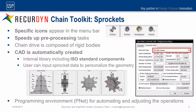The Chain Toolkit is dedicated to the creation of chain transmissions. Therefore, it gives the user access to specific entities normally used in the creation of these systems. Specific icons appear in the menu bar to create, for example, rollers and different kinds of sprockets, such as multiplex and silent sprockets, as you can see in the image. The toolkit speeds up all preprocessing tasks because it automatically creates the 3D CAD geometry. The user can simply select entities from an internal library, which includes standard elements, or input specific data to personalize the geometry. All elements created in the toolkit are modeled as rigid bodies.